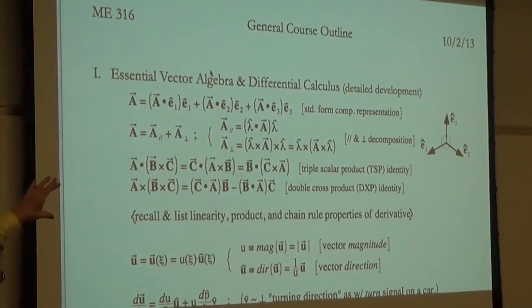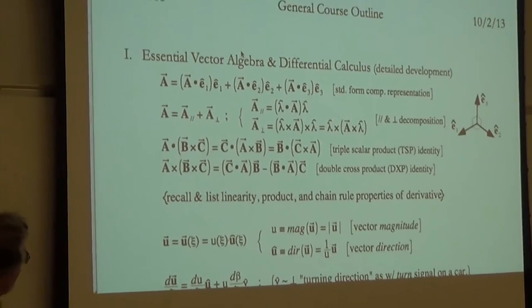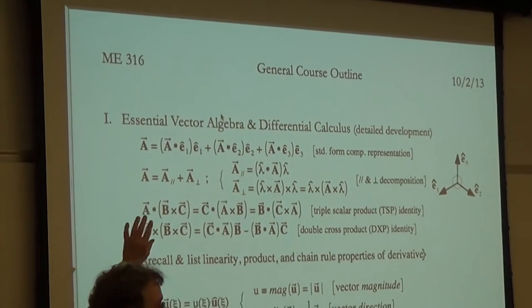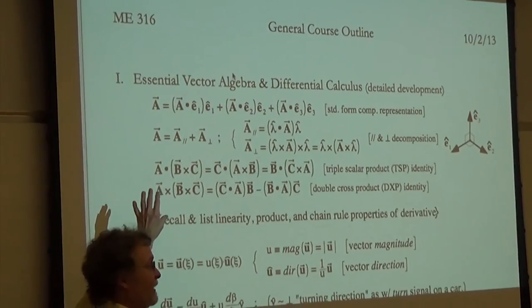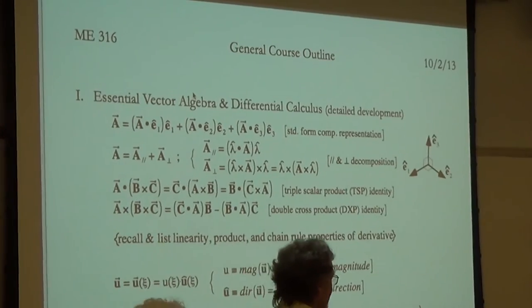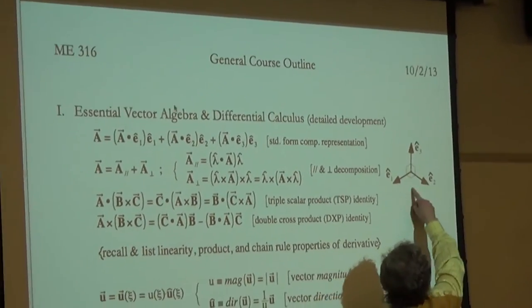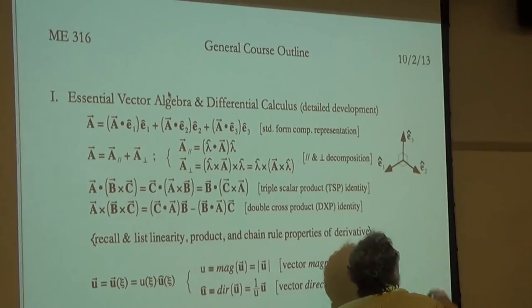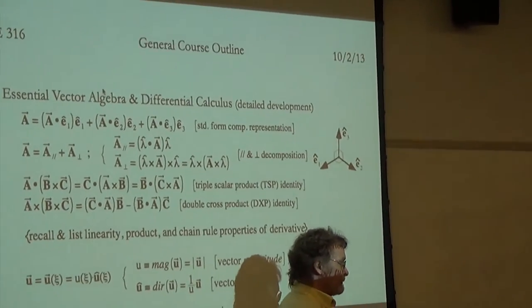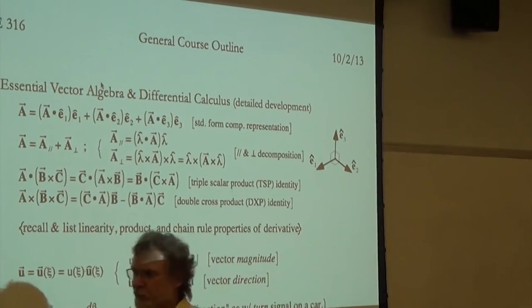We're going to talk about some essential vector algebra tools. You're seeing basically four different relationships here. The first thing I want to talk about, which is really important in vector analysis, is the role played by what's called an ortho-normal triad. What is an ortho-normal triad?